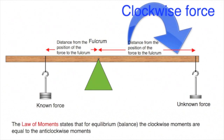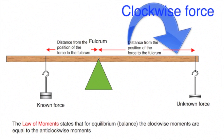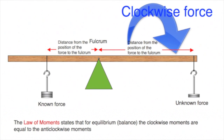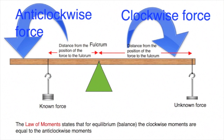Remember that a moment is the force times the distance. The unknown force on the right-hand side is pulling the ruler around clockwise — that is the clockwise moment. The known force on the left-hand side will be pulling the ruler around anti-clockwise. If we balance the ruler so that it is level and steady, then it is in equilibrium, and in this state the clockwise moment is equal to the anti-clockwise moment.